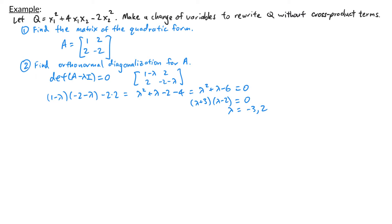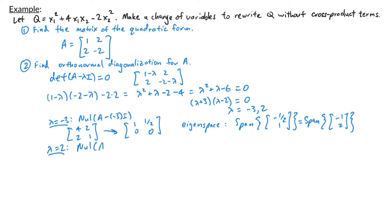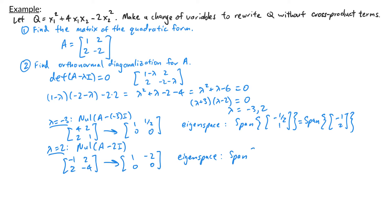Now let's find the corresponding eigenspaces. For lambda equals negative 3, we find the null space of A plus 3I, which is the matrix [4, 2; 2, 1]. This row reduces to [1, 1/2; 0, 0], so the eigenspace is the span of the vector (-1, 2). For lambda equals 2, the null space of A minus 2I — the matrix [-1, 2; 2, -4] — row reduces to [1, -2; 0, 0], giving eigenspace span of (2, 1).